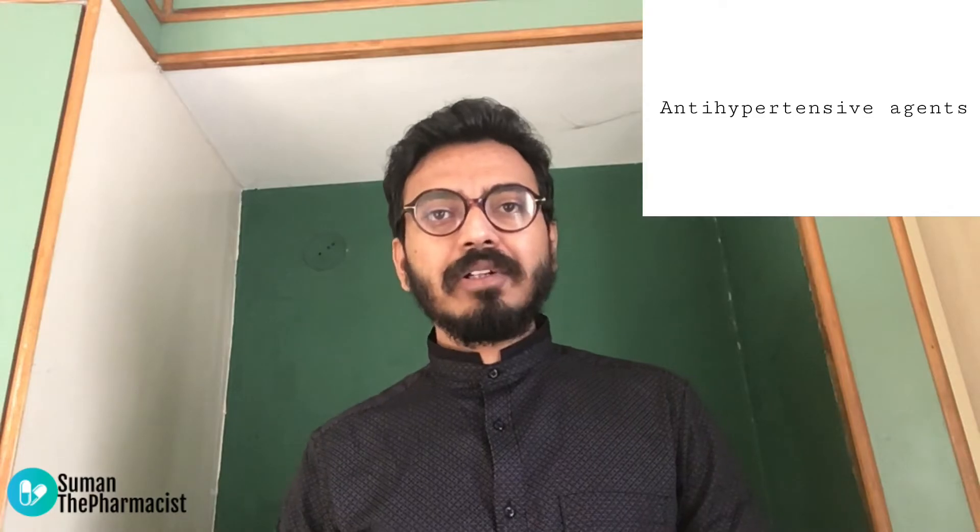So today's video, I will discuss with you what is anti-hypertensive agent. These are the class of drugs which is used to treat high blood pressure. These drugs act by different mechanisms to lower the blood pressure and are classified into 10 categories.